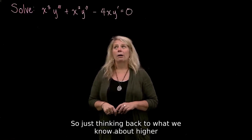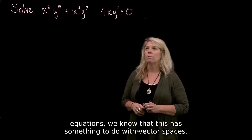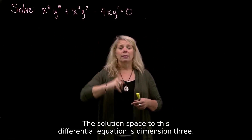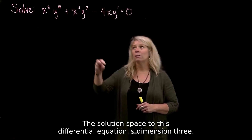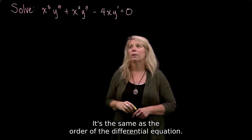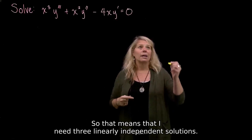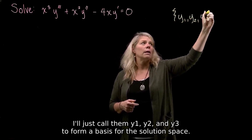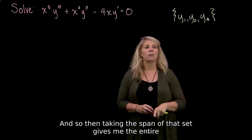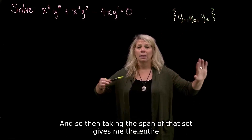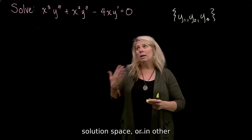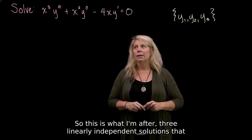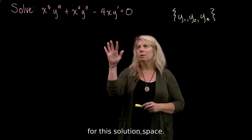Thinking back to what we know about higher order linear homogeneous differential equations, we know this has something to do with vector spaces. The solution space to this differential equation has dimension 3, the same as the order of the differential equation. That means I need three linearly independent solutions — y1, y2, and y3 — to form a basis for the solution space, and the span of that set gives me the entire solution space, i.e., the set of all solutions.